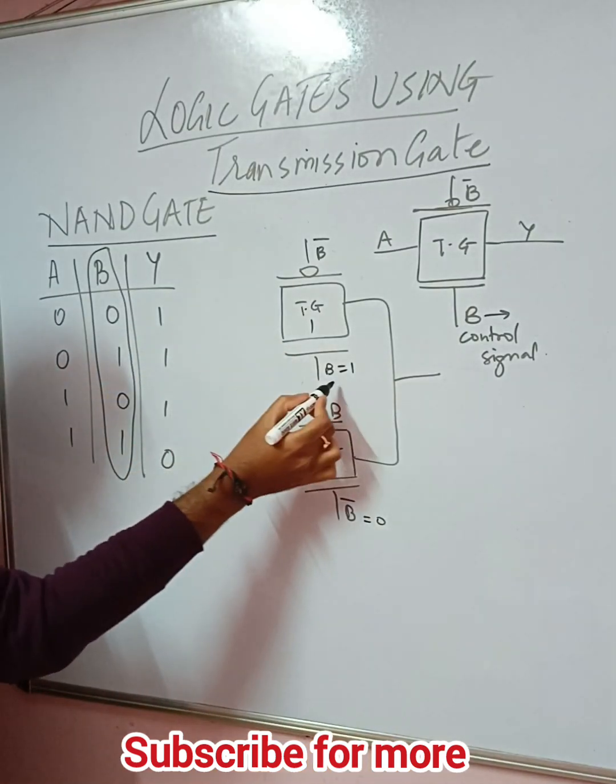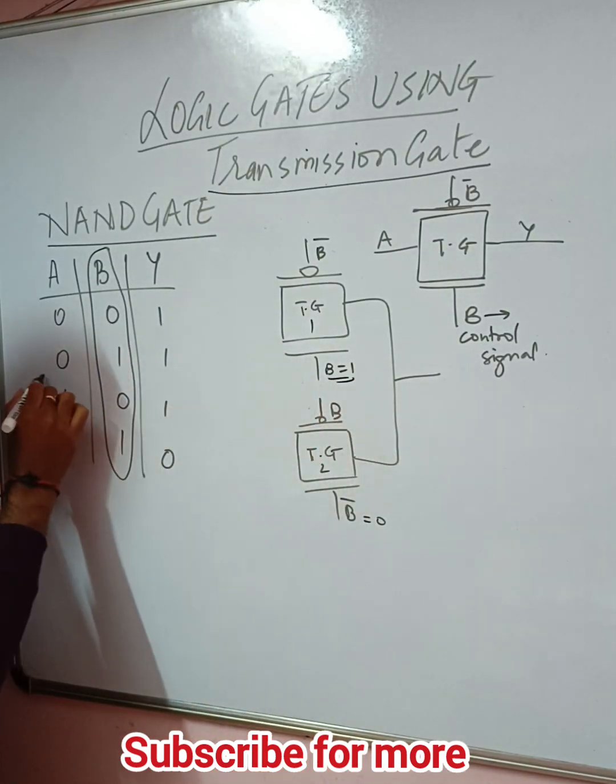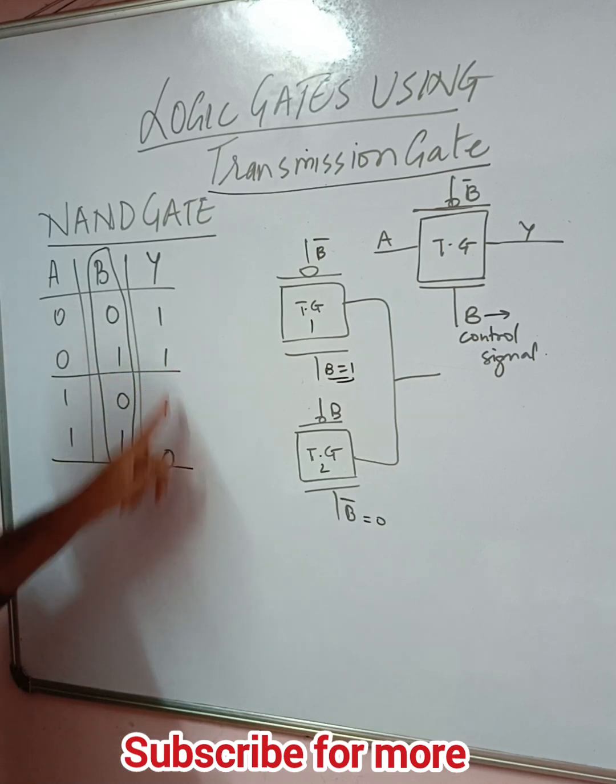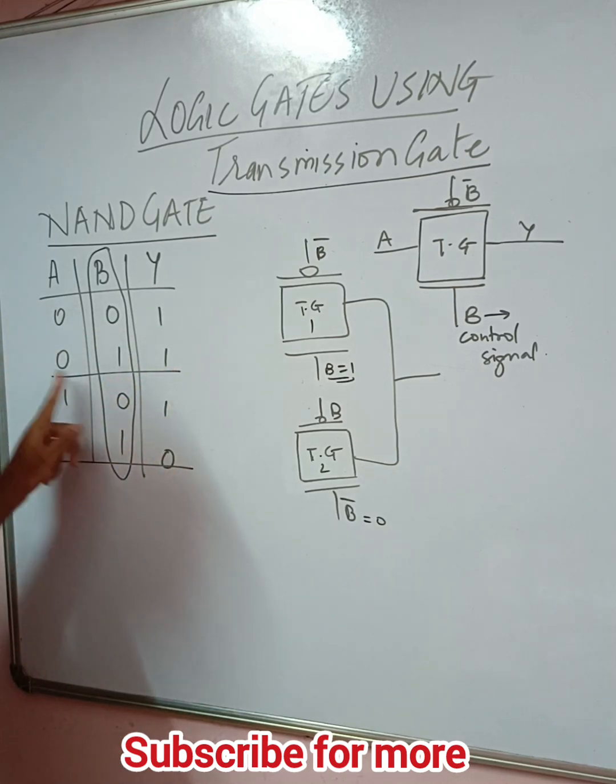There are two combinations when B equals 1. What are the outputs? 1 and 0. When A is 0, Y is 1, and when A is 1, Y is 0. So it is basically inversion.